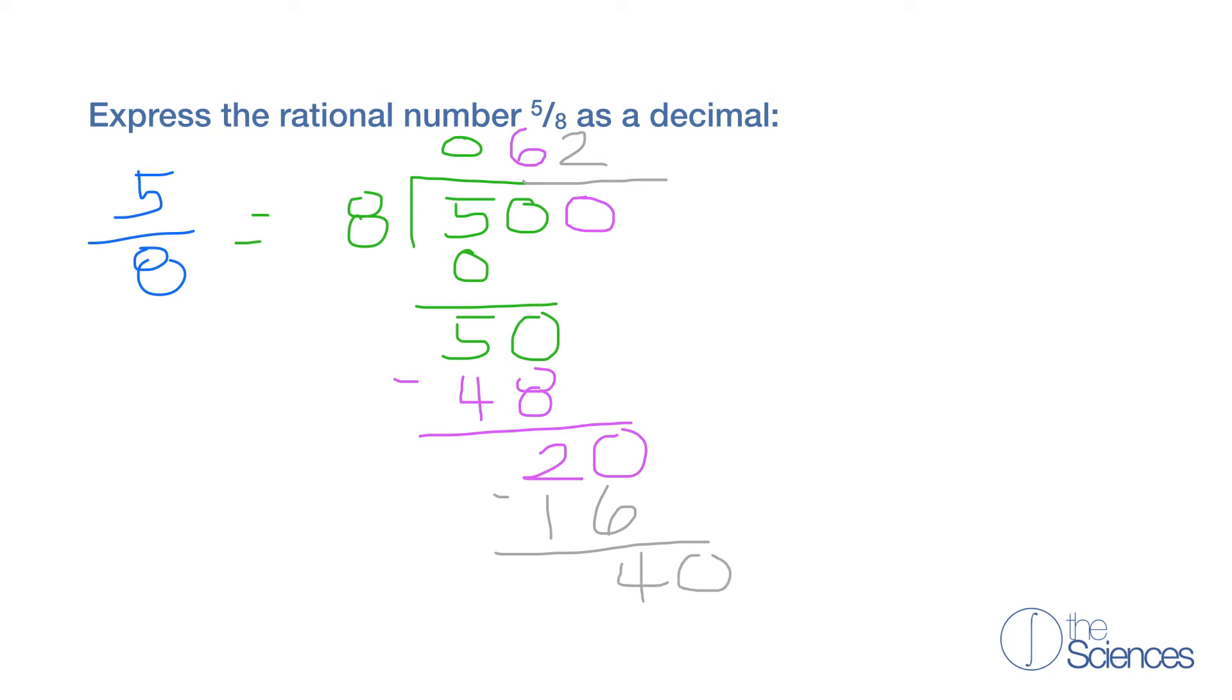So we're going to write another 0 and drop that down. So now how many times does 8 go into 40? Well that's 5 times. So now 5 times 8 is 40. And 40 minus 40 is 0.